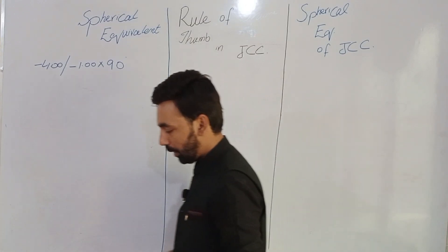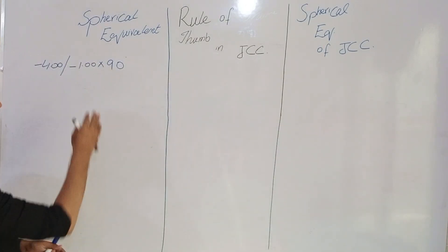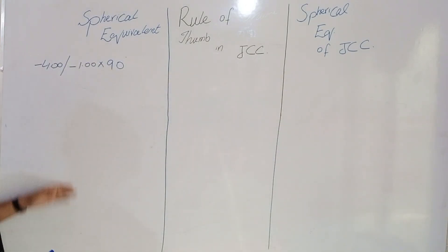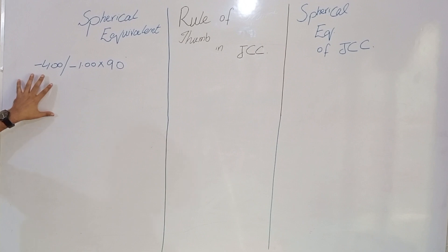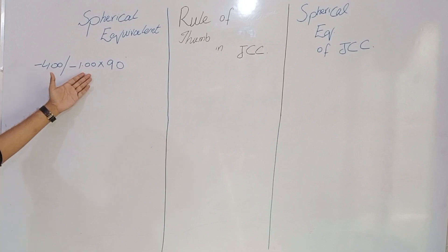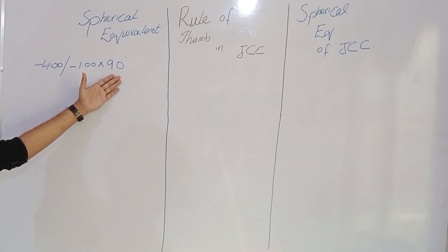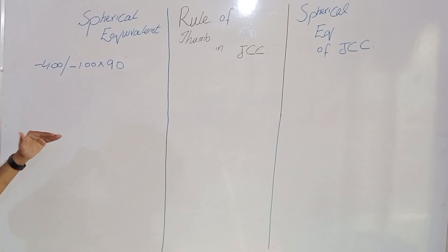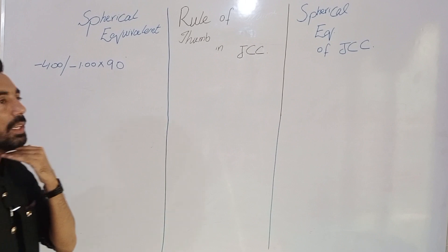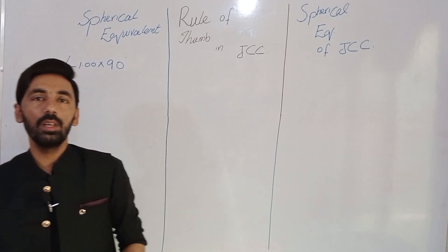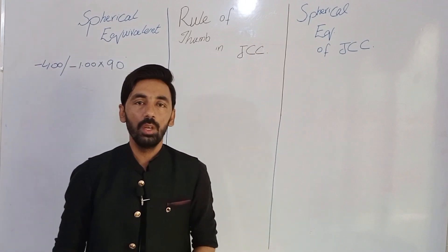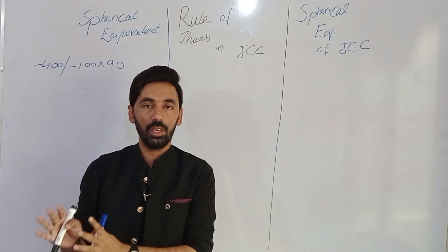First, let's learn about the spherical equivalent in normal prescriptions, and we will make differences between all of these. Suppose we have a prescription written on the whiteboard: spherical correction is minus four, cylindrical correction is minus one, and axis of the cylinder is 90 degrees. In spherical equivalent, we are actually removing our cylindrical correction.